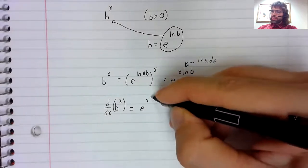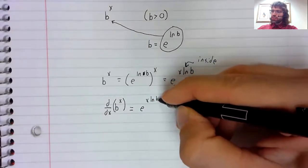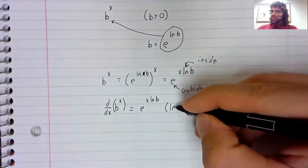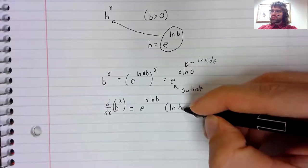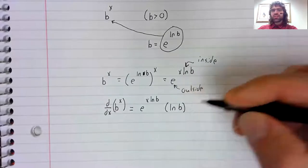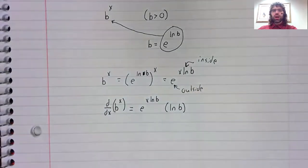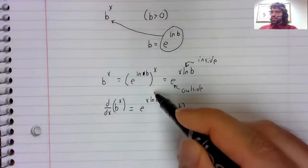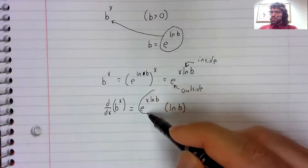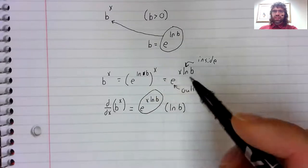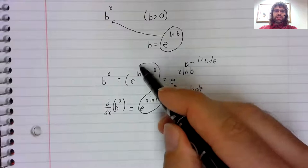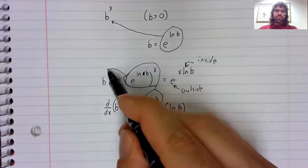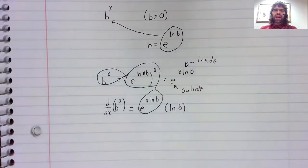And when we use the chain rule, the derivative of a constant times x is the constant. Now e to the x ln b is b to the x.